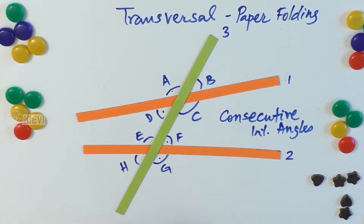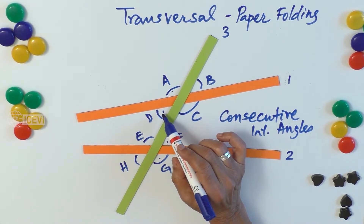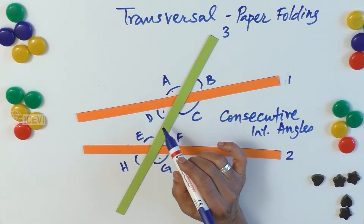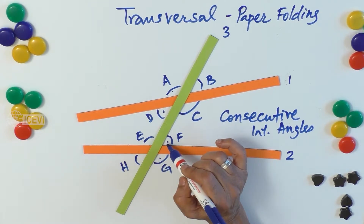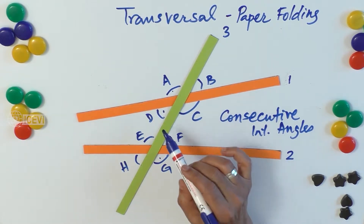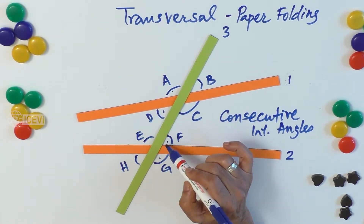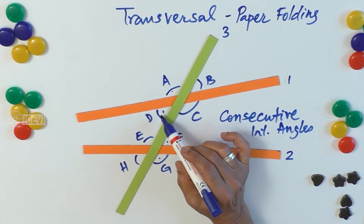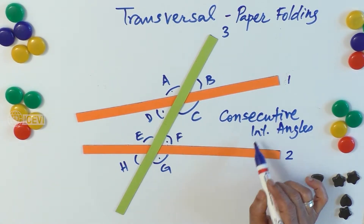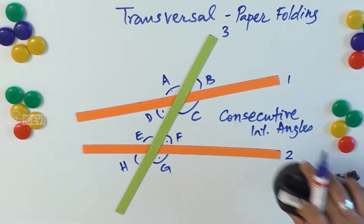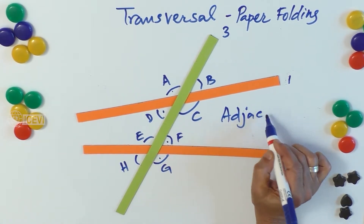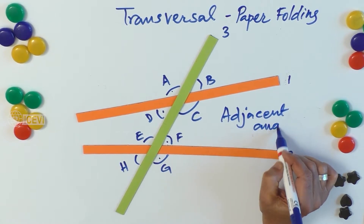We had used the terminology 'alternate interior angles,' defining D and F as alternate interior angles. They are called alternate because we leave E in between and go to the alternate. D and E, and C and F, are called consecutive interior angles. One more angle to define is what we call adjacent angles.